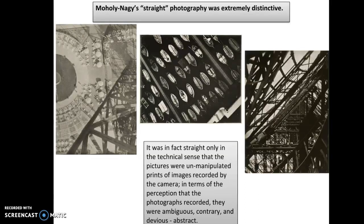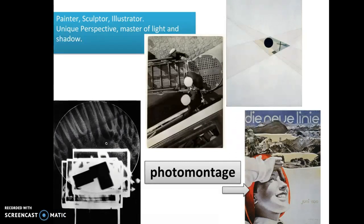In terms of the perception that the photographs recorded, they were incredibly ambiguous, contrary, and devious. Many of them were abstract structures. His deep interest in the photogram and the photomontage provided a challenging option to the doctrine of straight photography, which especially in the United States dominated very serious photography. He was one of the most persuasive and effective theoreticians of a concept of art education that grew out of the Bauhaus, and its influences are still felt to this day in design and art. You can see here the variety of mediums that he worked in, and throughout all mediums, the style is very much the same.